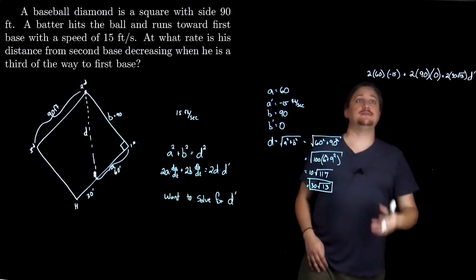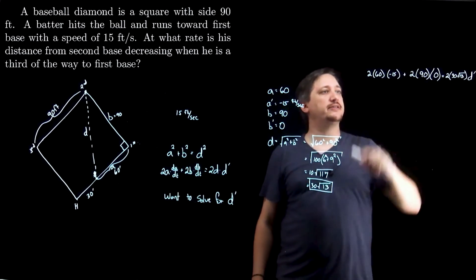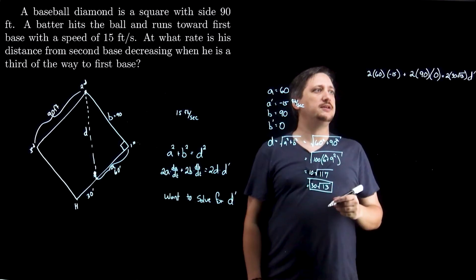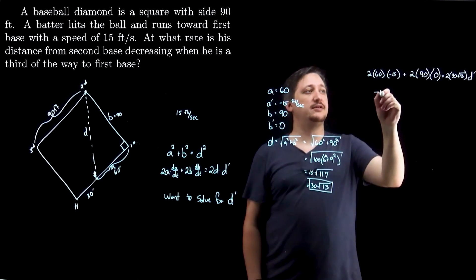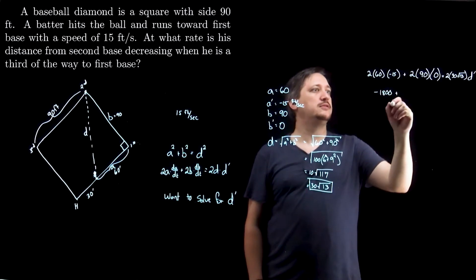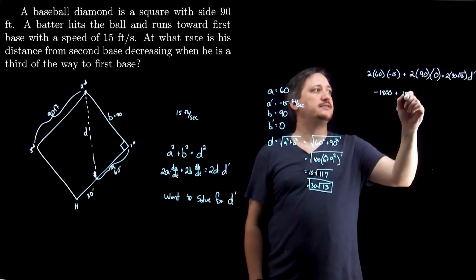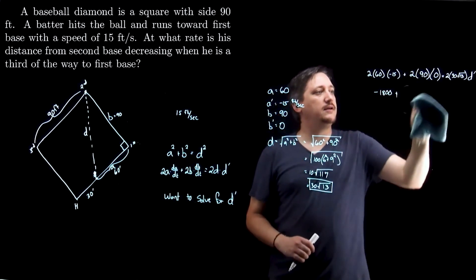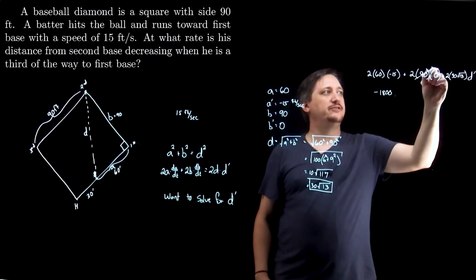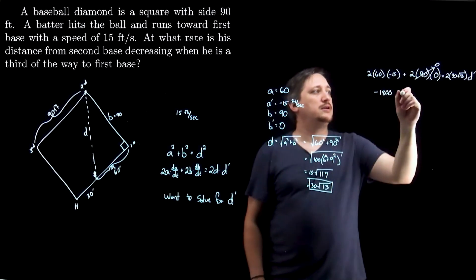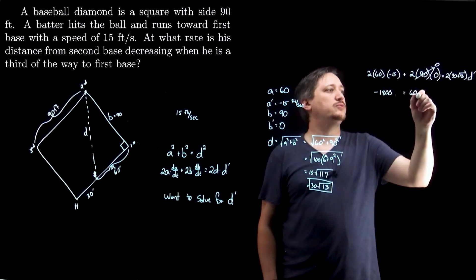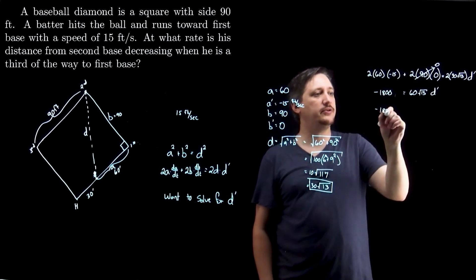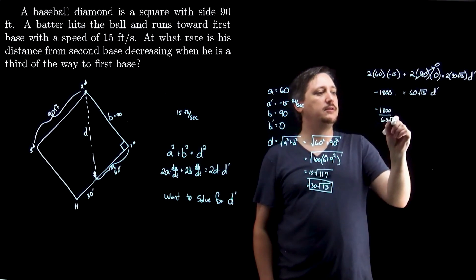And what I want is d prime, so I'm going to put all this stuff together on the left and then move that thing over. So here I have 2 times 60 times -15, so that's going to be -30 times 60, so -1800 plus 180, I guess. No, sorry, I was doing that again. 180 times zero. I mean, I could, but I'm just going to go ahead and say 0 equals 60√13 d prime. Moving that over, I'm going to have -1800 over 60√13 equals d prime.